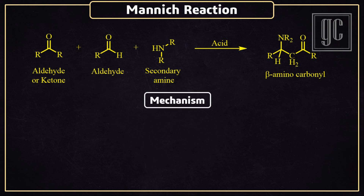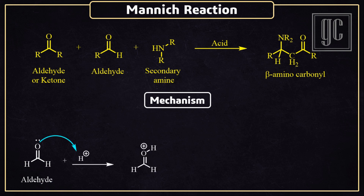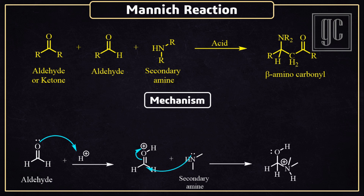Now we are going to discuss the mechanism of this reaction, which proceeds through three steps. The first step is the formation of the iminium ion. The aldehyde, in the presence of acid, gets protonated and a positive charge on oxygen is generated. The lone pair of the secondary amine attacks on the electrophilic carbonyl carbon, and carbon-nitrogen bond formation takes place. The pi-electrons of the carbonyl move to the protonated oxygen and the positive charge is neutralized. Due to tetravalency, a positive charge on nitrogen is generated.